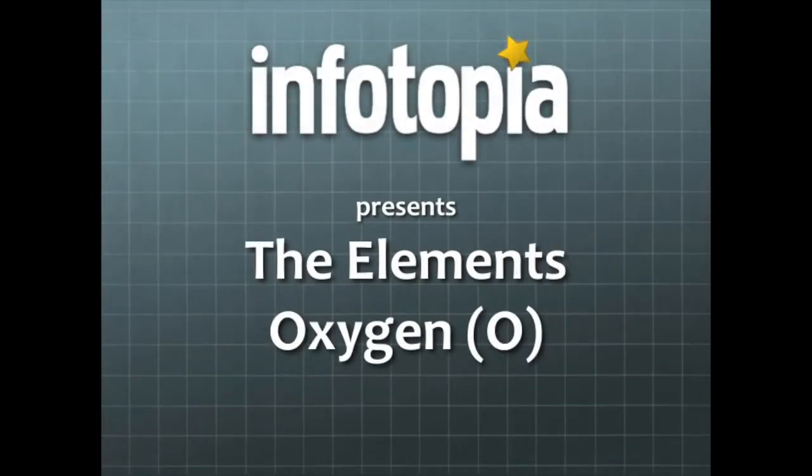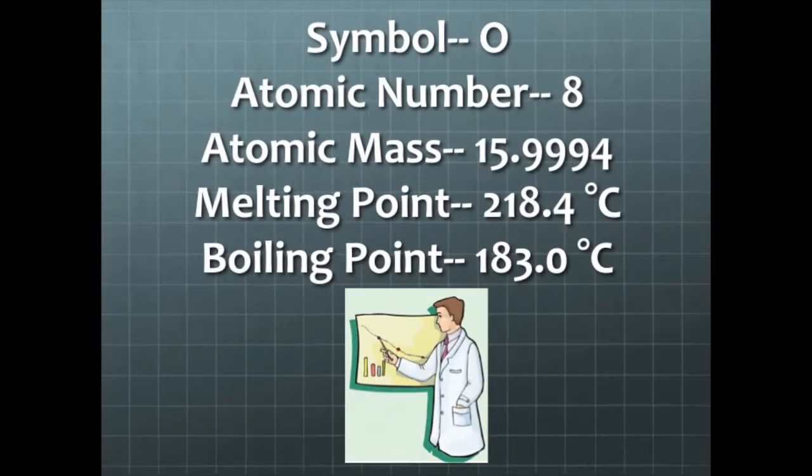Infotopia presents the elements oxygen. Oxygen is represented by the symbol O with an atomic number of 8, an atomic mass, melting point and boiling point as shown.